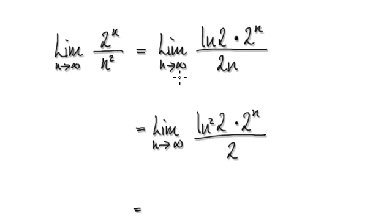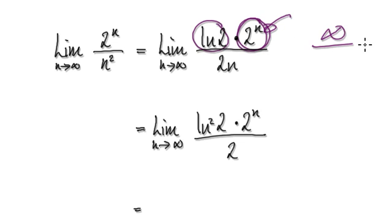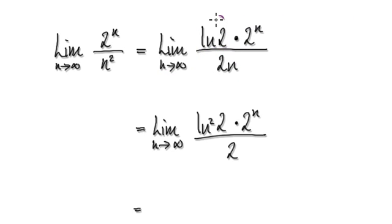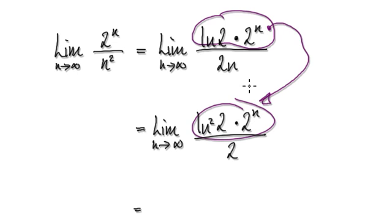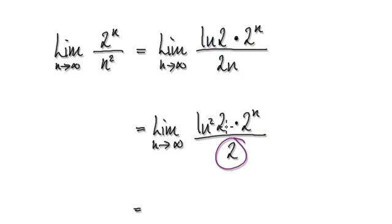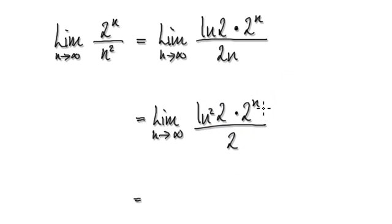Let's check again. As n tends to infinity, the numerator after differentiating contains a constant, but the denominator is getting bigger and bigger, heading towards infinity. Checking again, the new expression is also infinity over infinity, so we apply L'Hôpital's rule a second time. Differentiating gives us a new expression where the numerator is a constant and the denominator just keeps getting bigger and bigger. So the limit diverges.